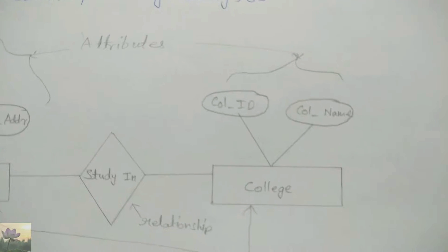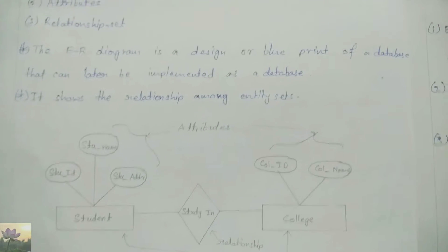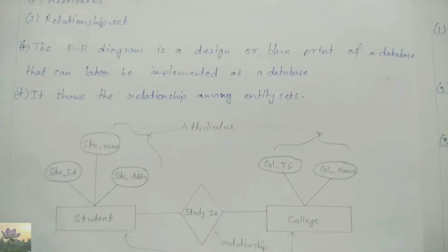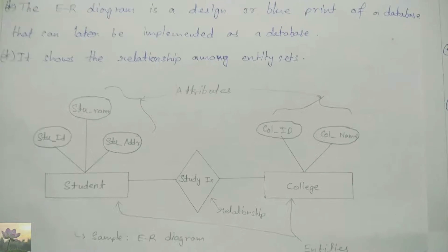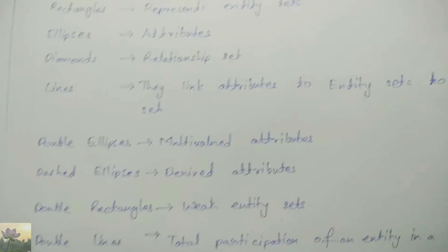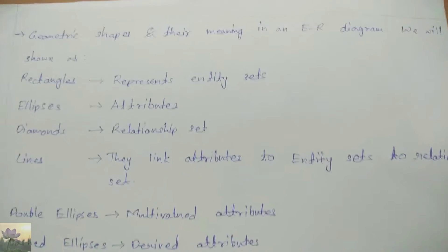First of all, before beginning the topic, let's know what an ER diagram is. As you can see here, the ER diagram consists of different types of entities and the relationships between them. In this example, we have students and college entities, with a 'studying in' relationship among them, and attributes like college ID, college name, student ID, student name, and student address.